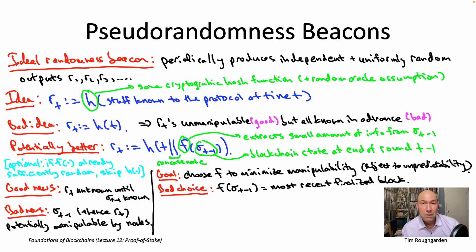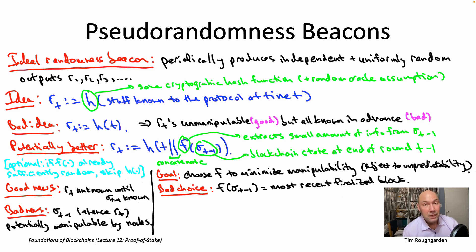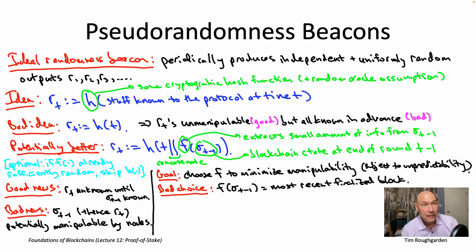This discussion gives us guidance about how to choose function f — which aspects of the blockchain state should determine these pseudo-random seeds. On the one hand, we want to make the good news as good as possible: be as unpredictable as possible. On the other hand, we'd like to give nodes as few avenues as possible for manipulation. Having f depend non-trivially on the transactions in the most recently finalized block would be a bad choice. The block proposer can choose any subset of pending transactions in any ordering, giving them zillions of possibilities for what the blockchain state sigma_{t-1} will be, and therefore zillions of possibilities for R_t — incentivizing them to grind through options until they find a pseudo-random seed that's advantageous.